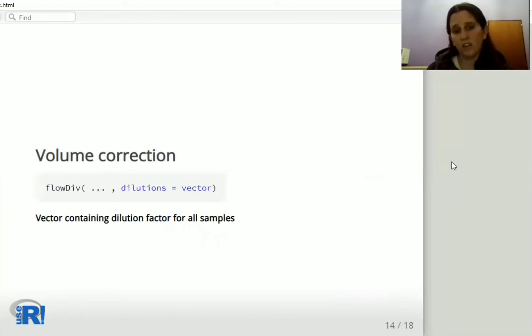The dilution argument activates the volume correction step. Here the input is a vector containing the dilution factor for all samples.